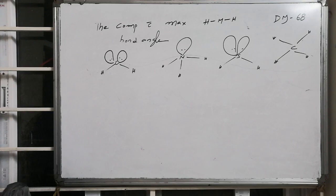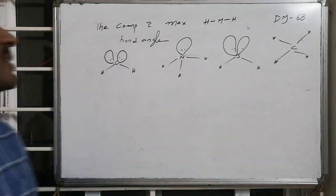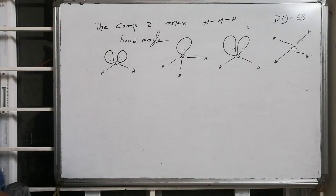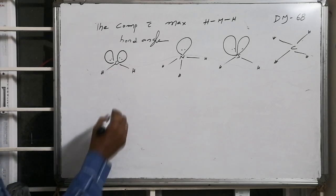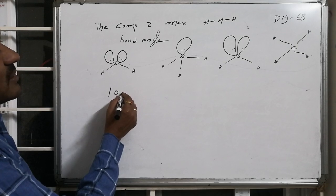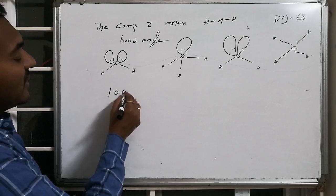So here maximum repulsions are there. Here also maximum repulsions are there. Moreover, here oxygen is more electronegative, which implies the bond angle appears to be somewhat greater. So this bond angle is 104 degrees.